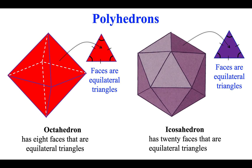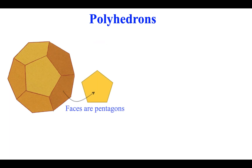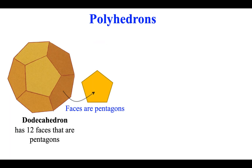Icosahedron has 20 faces that are equilateral triangles. Dodecahedron has 12 faces that are pentagons.